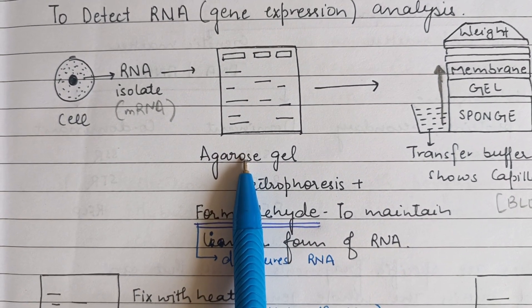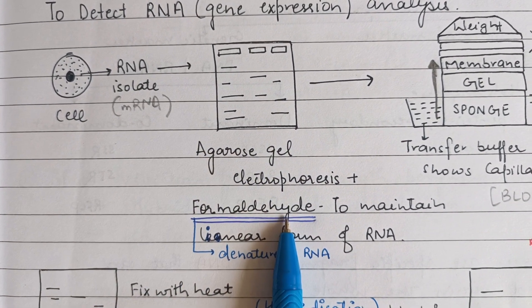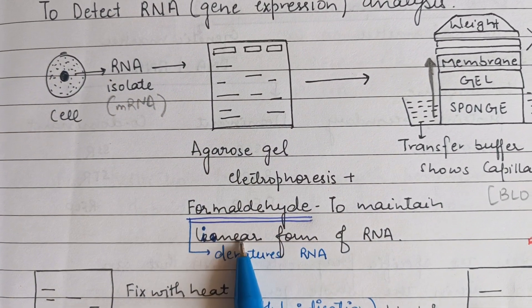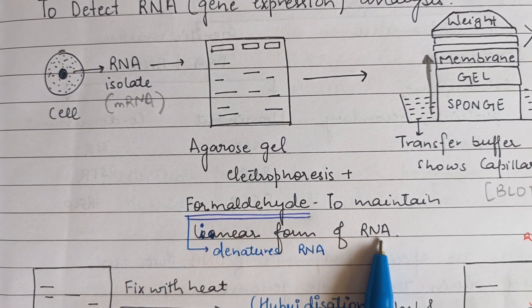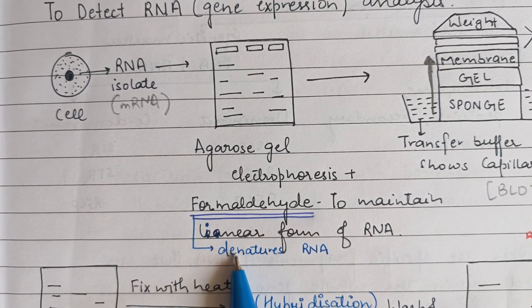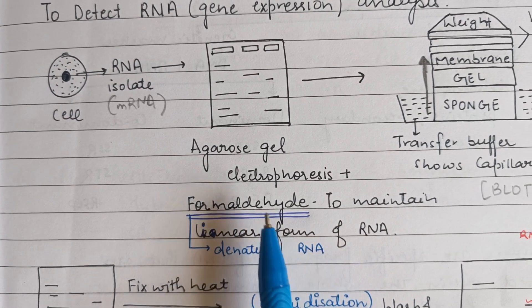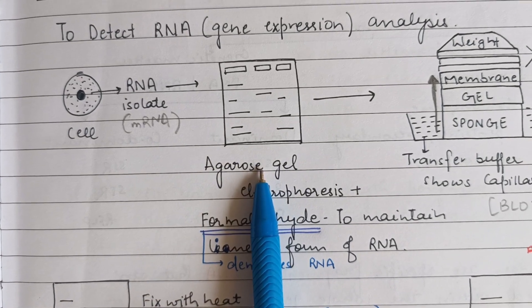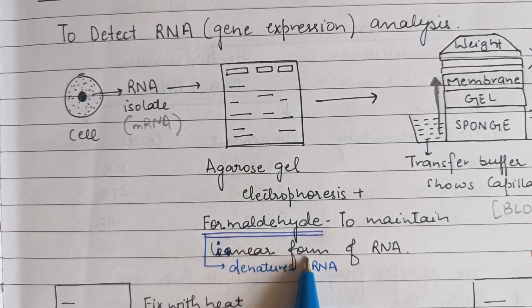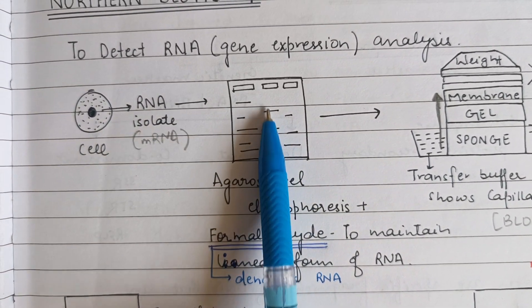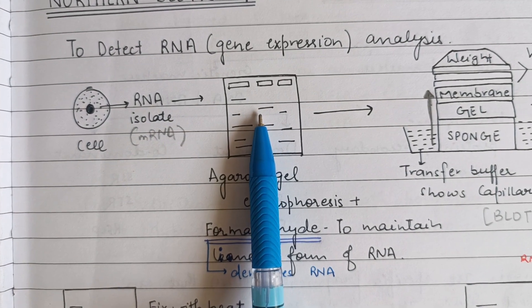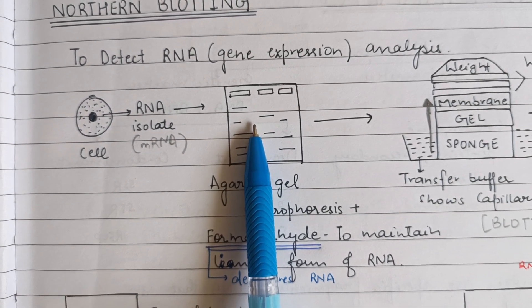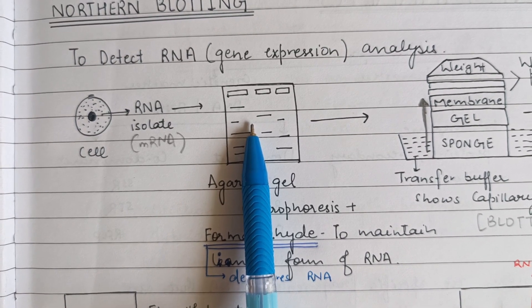Formaldehyde is a very important exception specific to Northern Blotting. The reason we add formaldehyde to the agarose gel is that we are using RNA as a sample. In order to maintain the linear form of RNA and to denature it, we add formaldehyde so that we can denature the RNA and perform nucleic acid hybridization, which is the basic principle of both Northern and Southern Blotting.